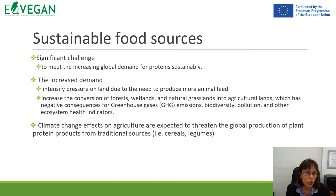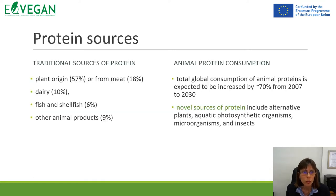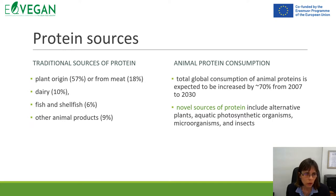This conversion has negative consequences on greenhouse gas emissions, biodiversity, pollution, and other ecosystem health indicators. It's really important to focus on climate change effects on agriculture, which is expected to threaten the global production of plant protein from traditional sources such as cereals or legumes. Protein sources nowadays include traditional plant-origin sources, meat, dairy, fish and shellfish, and other animal products.